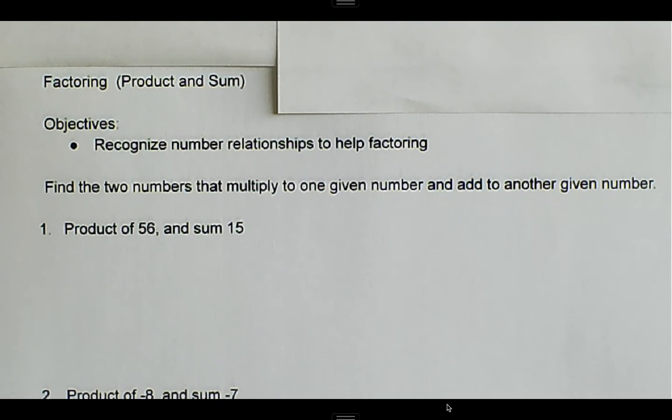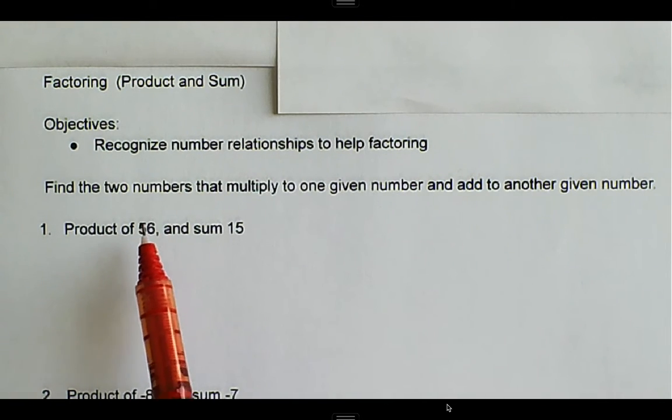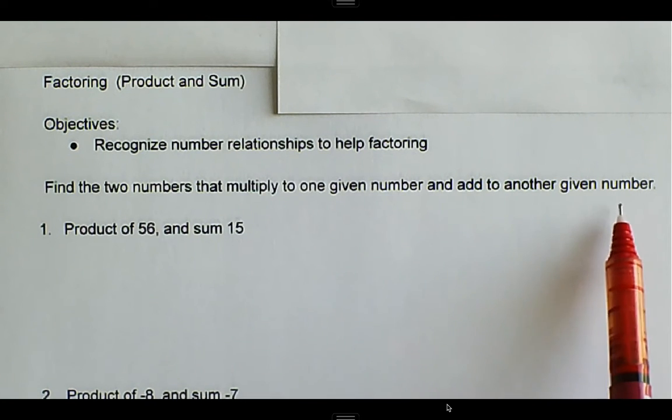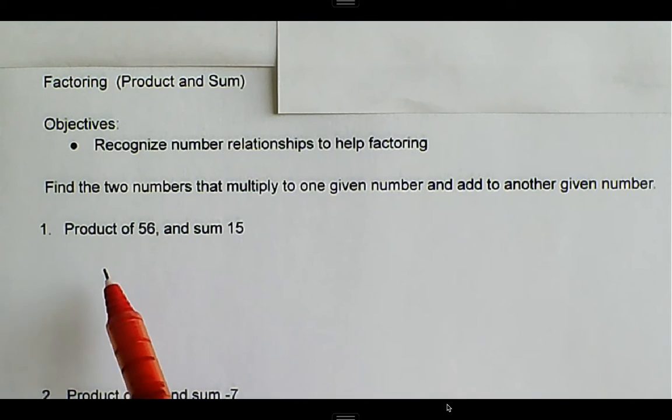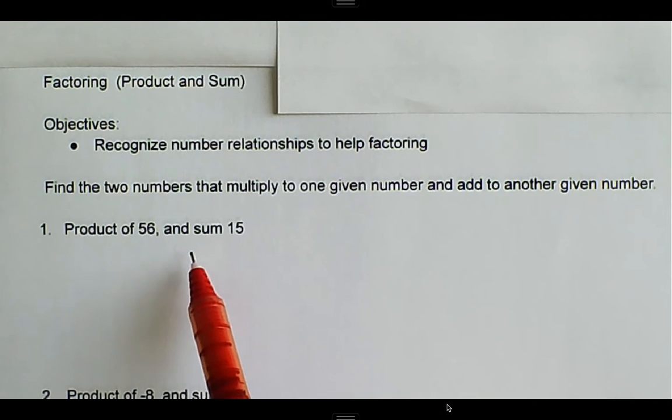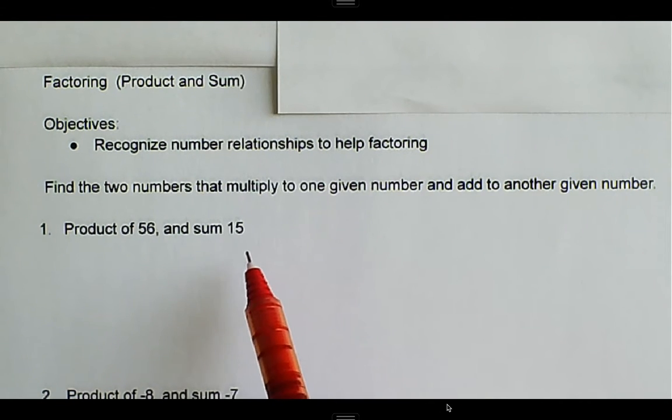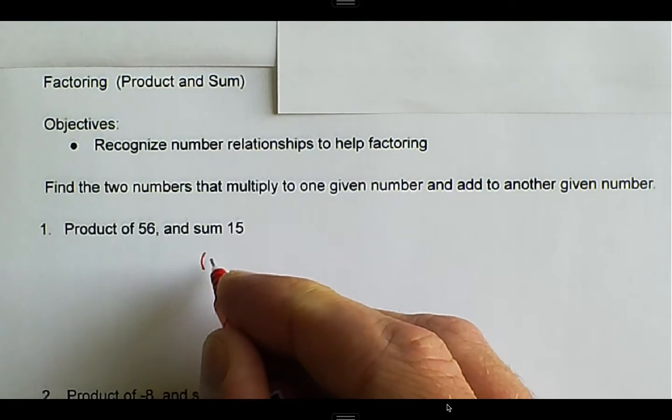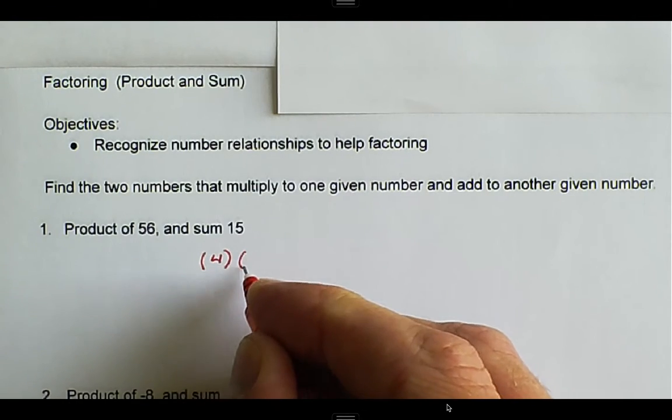We have a couple examples we're going to talk about. The examples are find two numbers that multiply to one given number and add to another given number. Here we have the product is 56, and the two numbers add to 15.